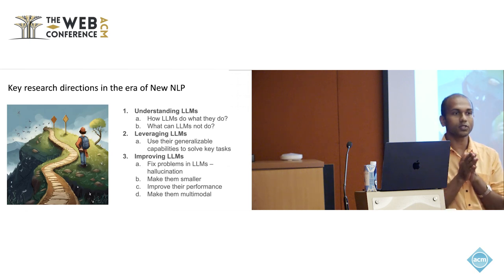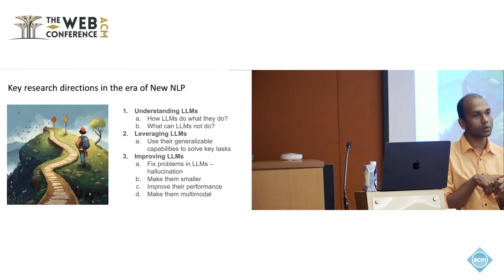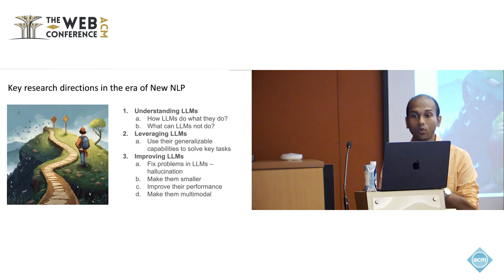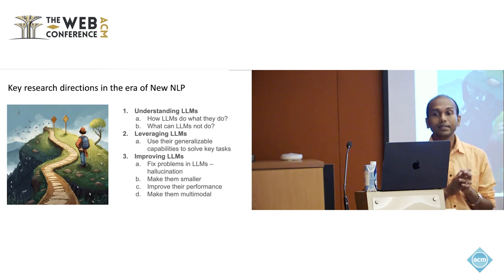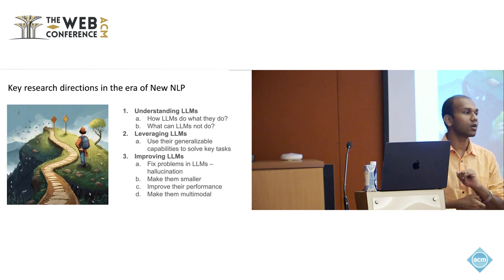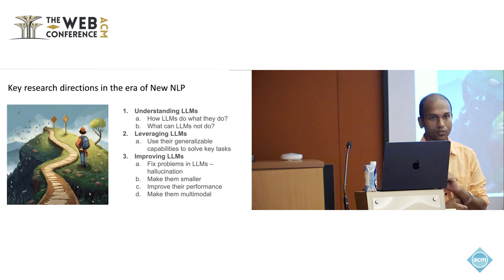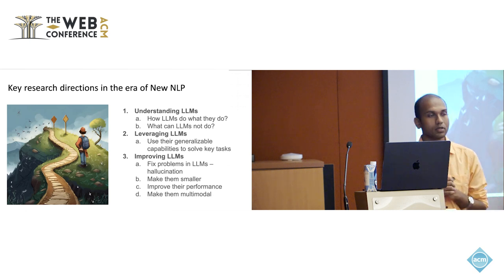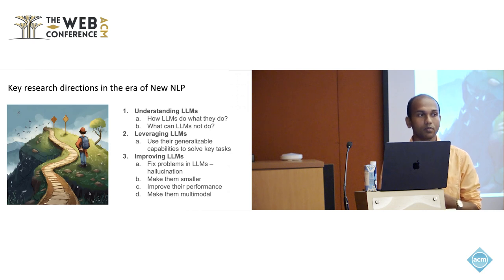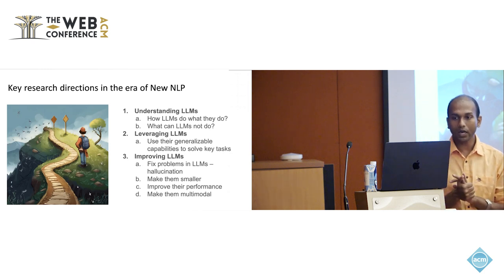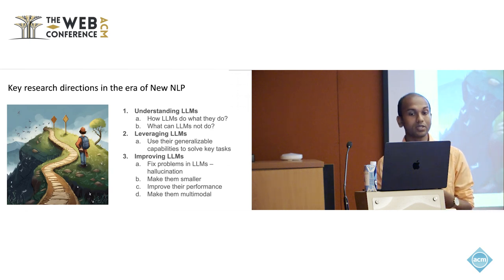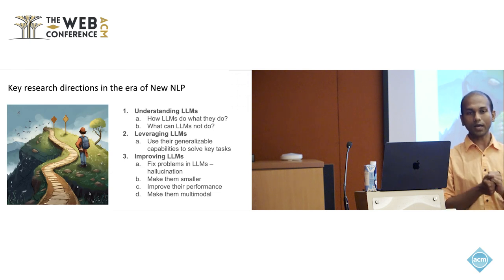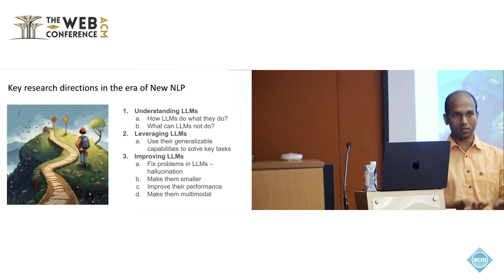We took a little bit of time, read about ChatGPT, tried it, and found three main things you can still research on. First is understanding LLMs — how LLMs do what they do and what they cannot do. Second is leveraging LLMs — how you can use the power of GPT-4 or LLaMA 3 to enhance other tasks, like relation extraction. Third is improving LLMs — for example, fixing the hallucination problem, making them smaller, improving performance, or making them multimodal. Most LLM research today focuses on these three categories.